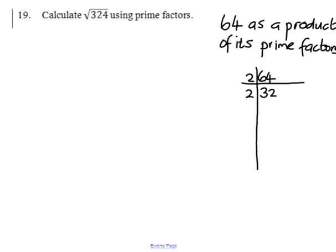32. 2 goes into 32, 16. 2 goes into 16, 8 times. 2 into 8 goes 4. 2 into 4 goes twice. 2 into 2 goes 1. Remember what I said, we always end with a 1.